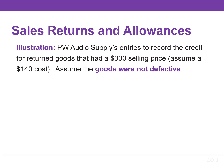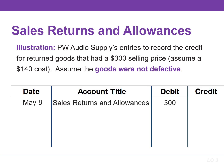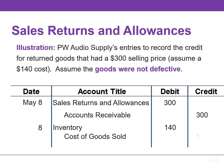PW Audio Supply's entries to record credit for returned goods involves an increase or debit to sales returns and allowances, and a decrease or credit to accounts receivable for $300, which is the selling price. We also need to record the cost, and if we assume the cost is $140, then we're going to increase or debit inventory and decrease or credit cost of goods sold.